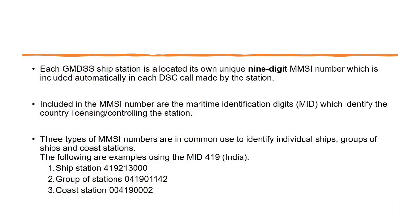Each GMDSS subsystem station is allocated its own unique 9-digit MMSI number, which is included automatically in each call made by the station. Included in the MMSI number are the maritime identification digits, which identify the country licensing and controlling the station. Three types of MMSI are commonly used to identify individual ships, groups of ships, and coast stations. The following are examples using MID 419, which is India.